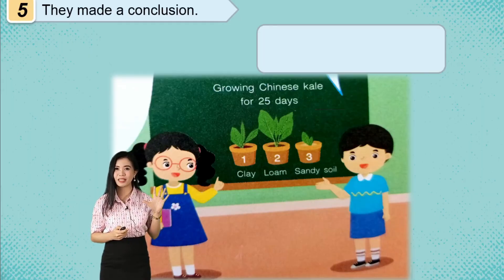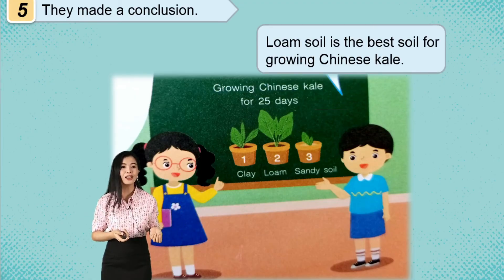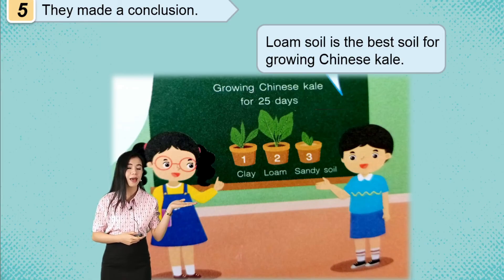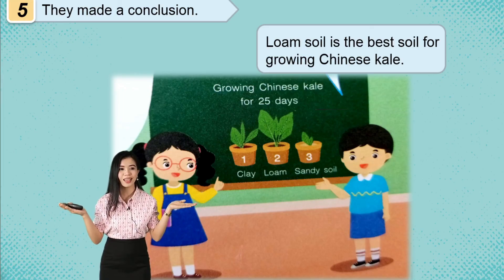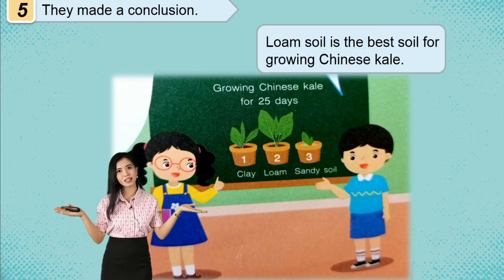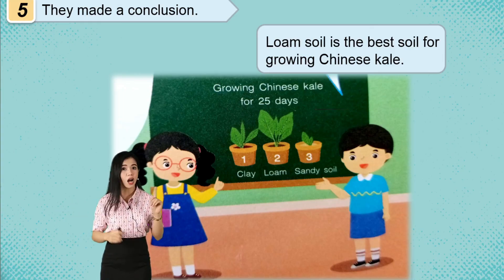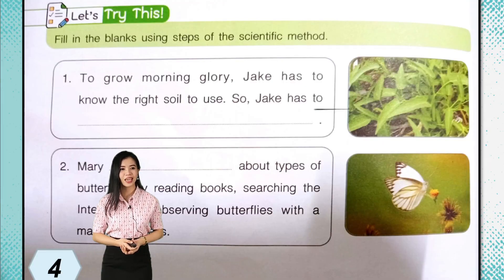Finally, the fifth step: they drew a conclusion — loam soil is the best soil for growing Chinese kale. Going back to their hypothesis, they had said loam soil would be the best soil, and their conclusion confirmed this, so their hypothesis and conclusion matched. Note that there is also a possibility that your hypothesis and result will not match.